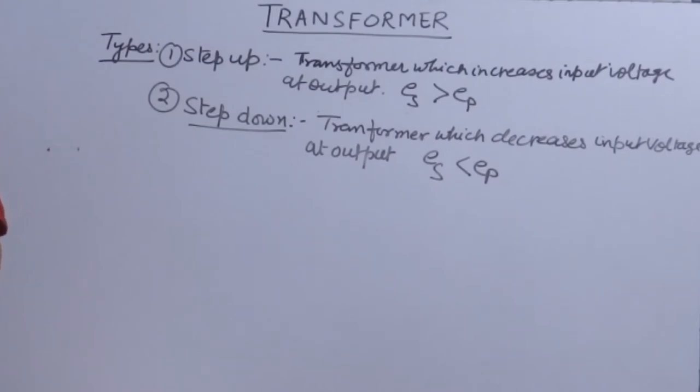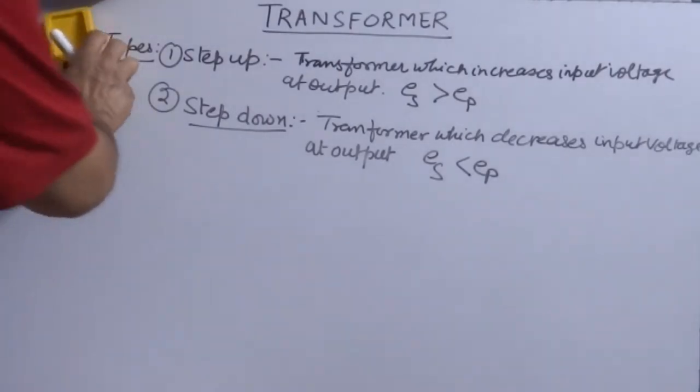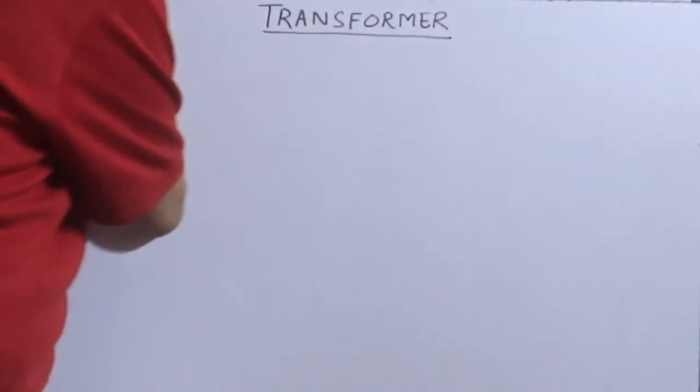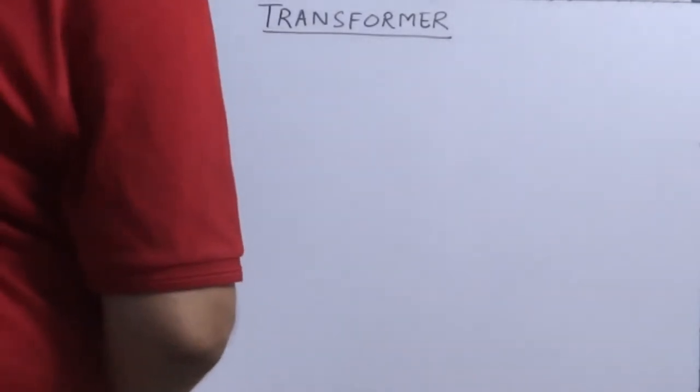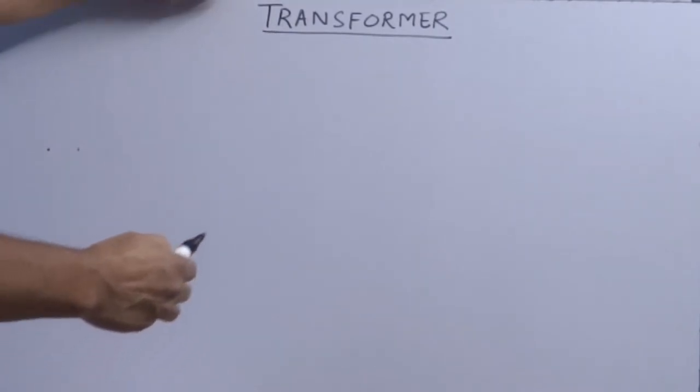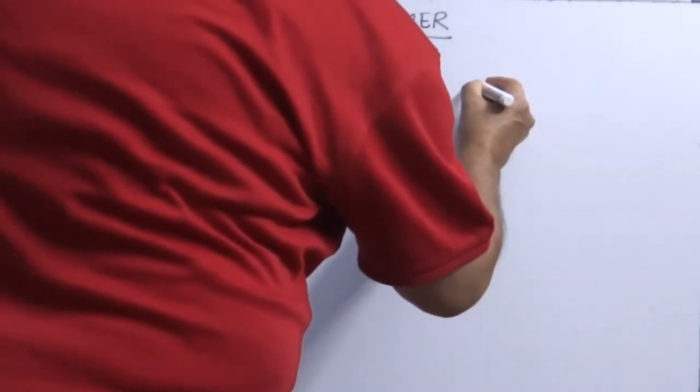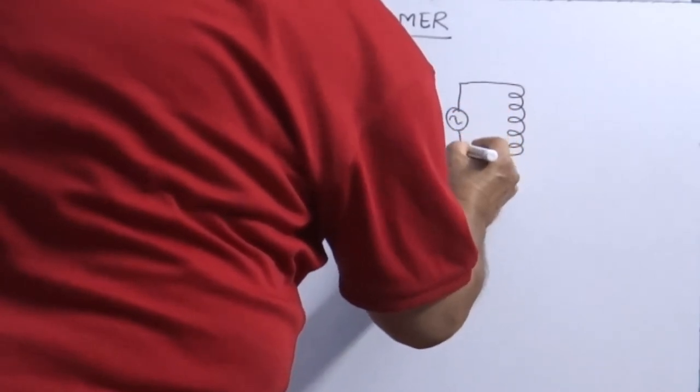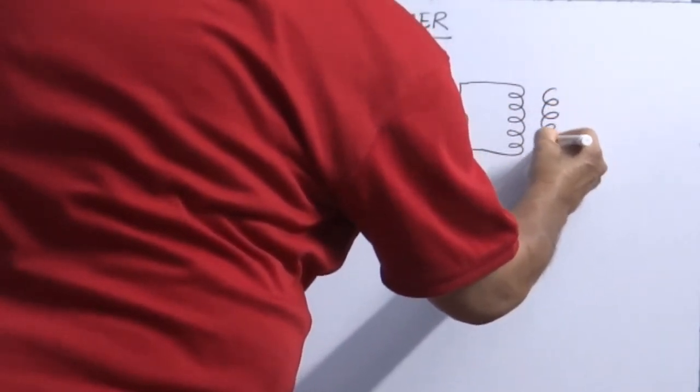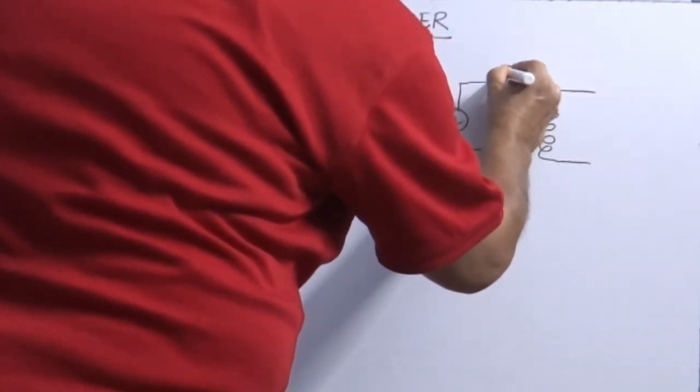These are two types of transformers which we are using practically nowadays. Now coming to the principle of working of transformer. Principle of working of transformer is based on mutual induction phenomenon. Actually in transformer, a rectangular soft iron core made of laminated sheets, well insulated from each other. Over this we bound two coils. This is first coil, this is second coil.